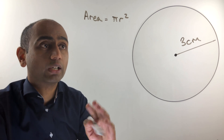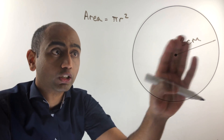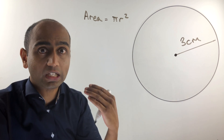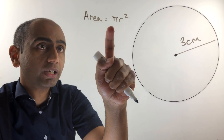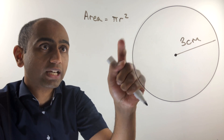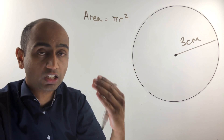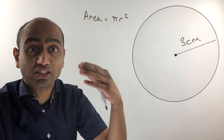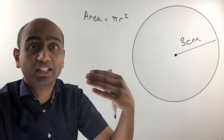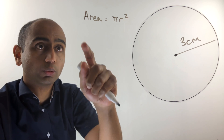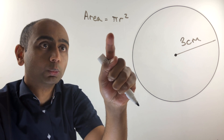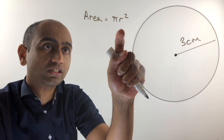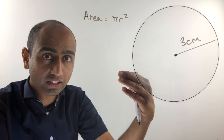In this video we are working out the area of a circle. The formula for the area of a circle is pi r squared. r stands for the radius, and squaring means to multiply it by itself, so we can think of this as area equals pi times the radius times the radius again.